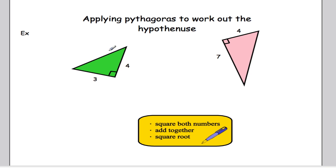So say we're given a right angle triangle like so, and I'm asked to work out what this side is. Well, using Pythagoras, all we do is we say, right, square both numbers, so 4 squared is 16, 3 squared gives me 9, add them together, 16 plus 9 is 25, and then finally take the square root of 25, and the square root of 25 is 5.